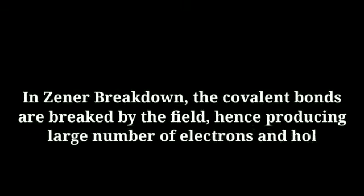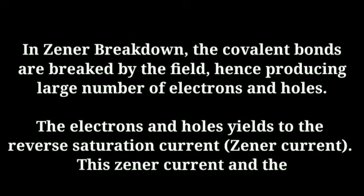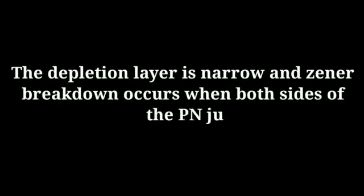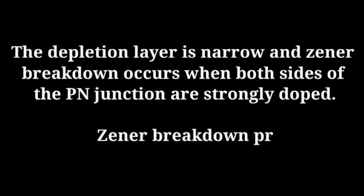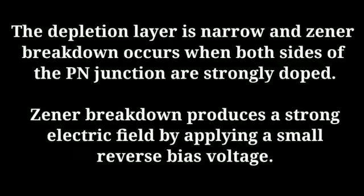In zener breakdown, the covalent bonds are broken by the electric field, producing a large number of electrons and holes. These electrons and holes yield the reverse saturation current, known as zener current, which is independent of the applied voltage. The depletion layer is narrow, and zener breakdown occurs when both sides of the PN junction are strongly doped. Zener breakdown produces a strong electric field by applying a small reverse bias voltage.